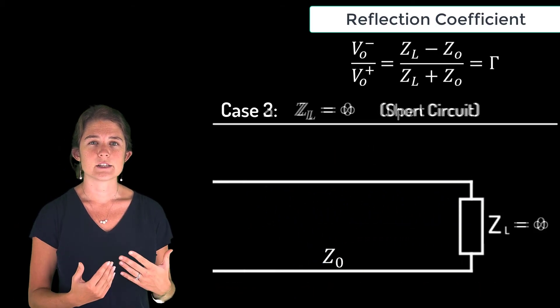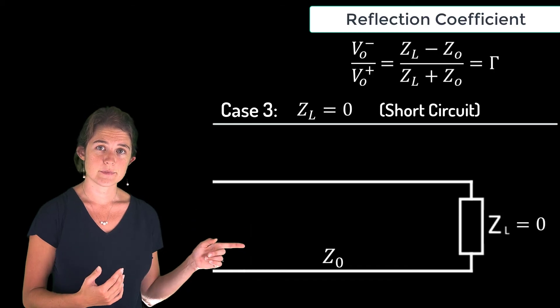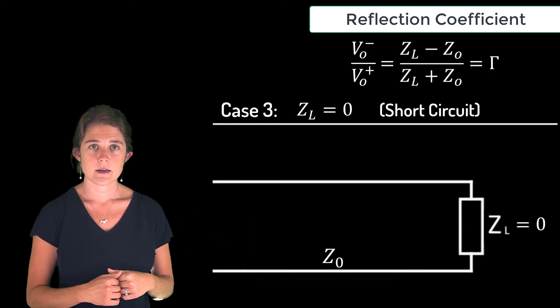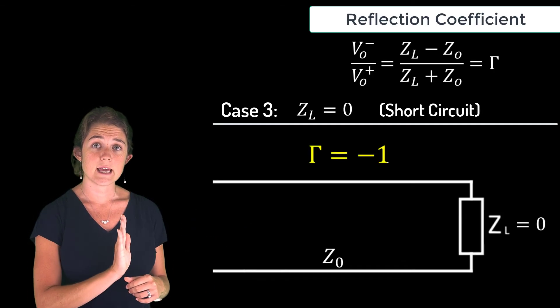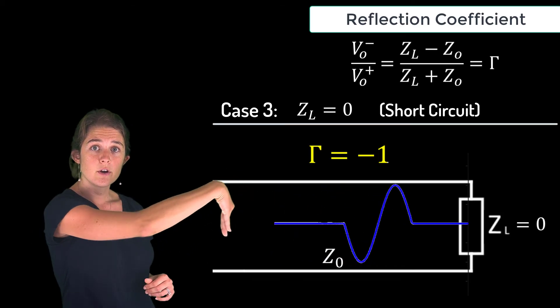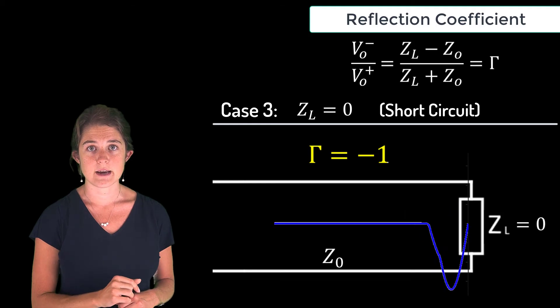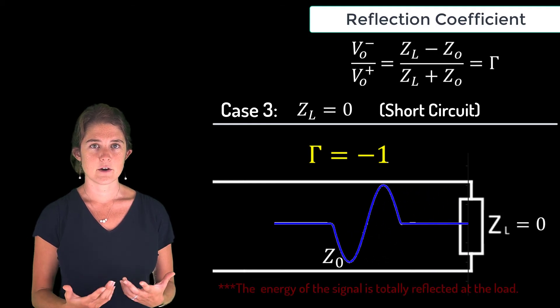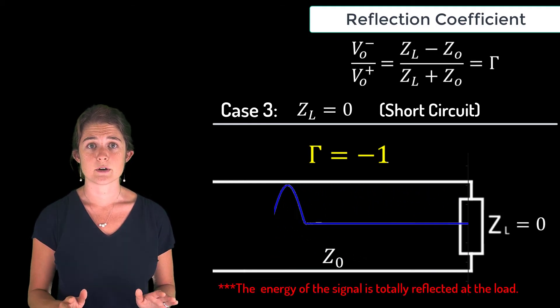Finally, suppose zL is zero. This is the short circuit scenario. Here gamma equals negative 1, indicating that the entire signal reflects back toward the load with a phase shift of 180 degrees. Like in the open circuit case, nothing is absorbed by the load.